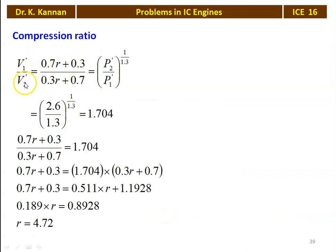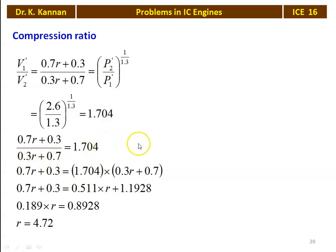To calculate the compression ratio, we take V1-dash by V2-dash = (P2-dash / P1-dash) to the power (1/1.3). V1-dash = 0.7R + 0.3 and V2-dash = 0.3R + 0.7. P2/P1 = 2.6/1.3 to the power (1/1.3) = 1.704. So (0.7R + 0.3) / (0.3R + 0.7) = 1.704. Cross-multiplying and solving: 0.7R + 0.3 = 1.704 × (0.3R + 0.7), giving R = 4.72. The compression ratio is 4.72.